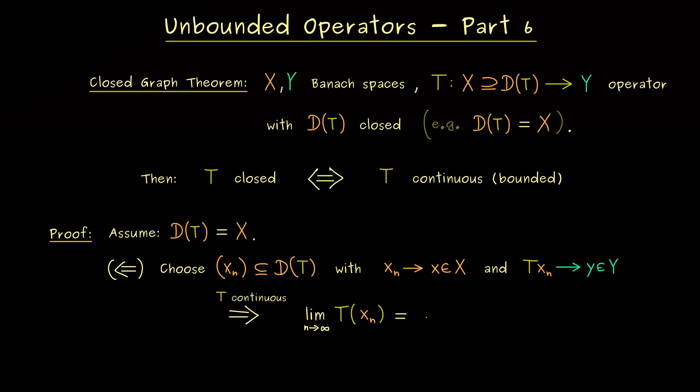Hence, if we explicitly write that down, we have T of the limit of x_n. And by assumption this is the point x and it already lies in the domain of T. So of course the domain here is not a problem at all.